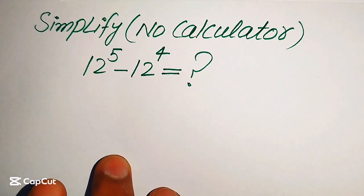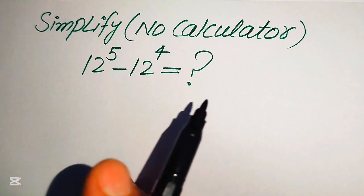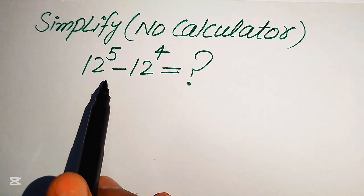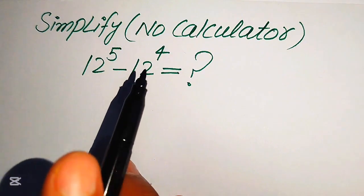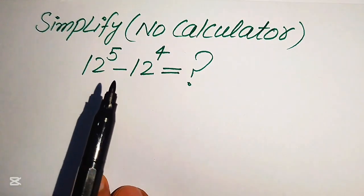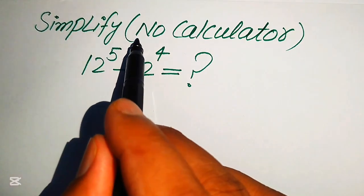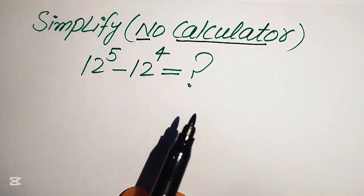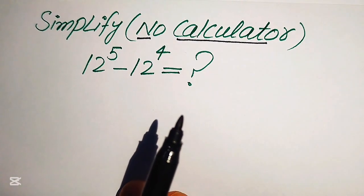Hello everyone. Today I want to show you how to simplify this algebraic expression without using a calculator. We have 12 to the power of 5 minus 12 to the power of 4, and we want to write this algebraic expression in its lowest form. Because a calculator is not allowed in this problem, we need to show all of the working on paper.